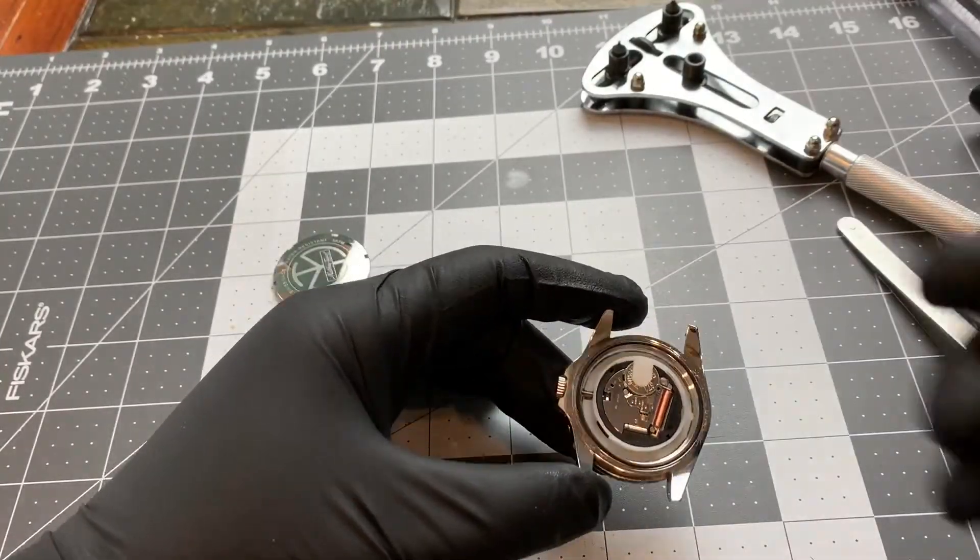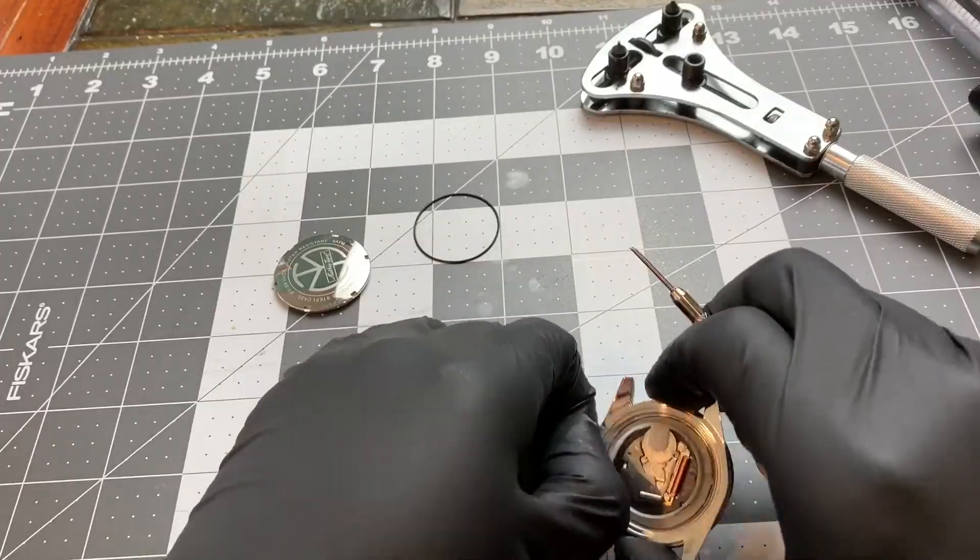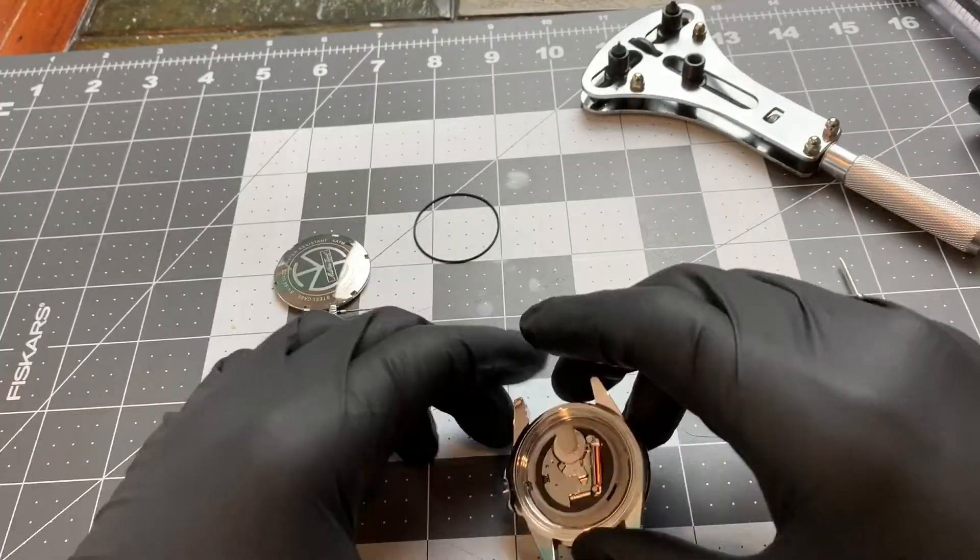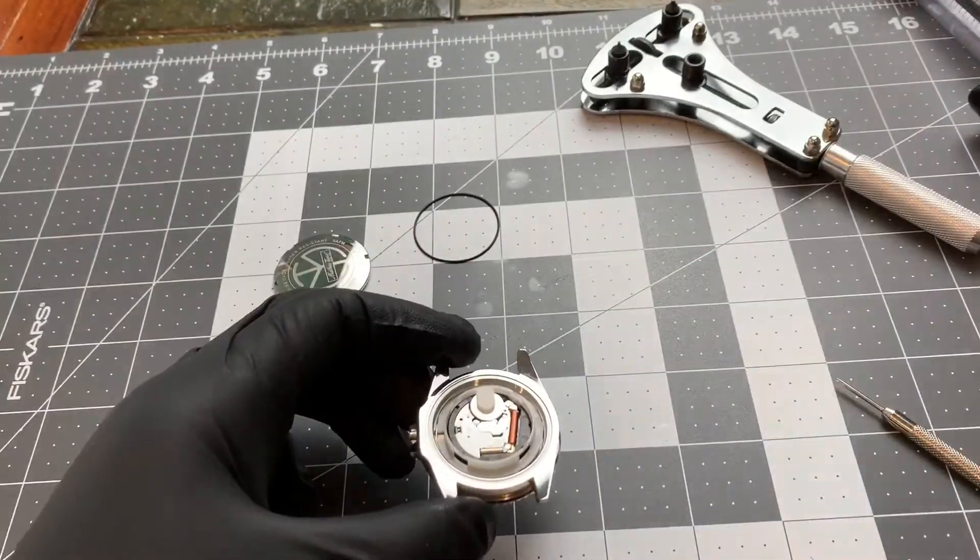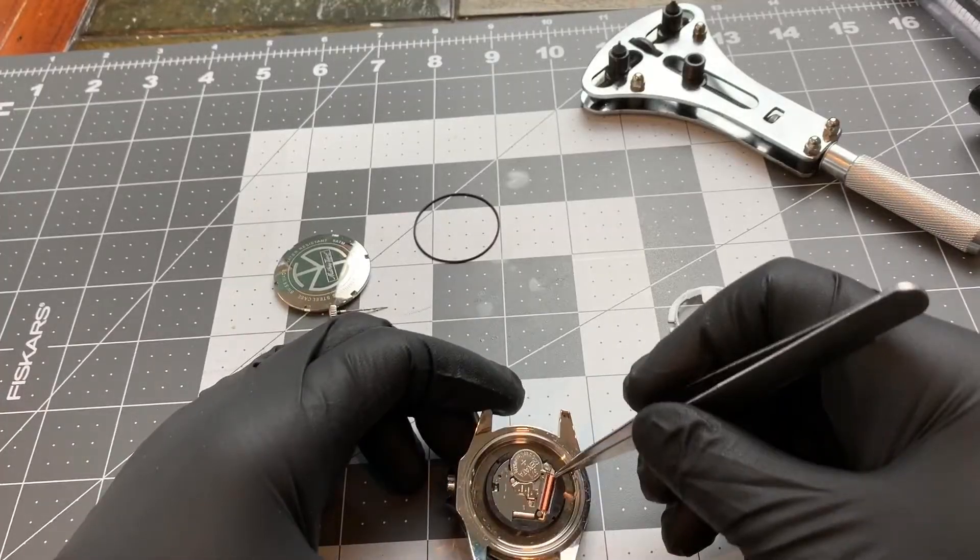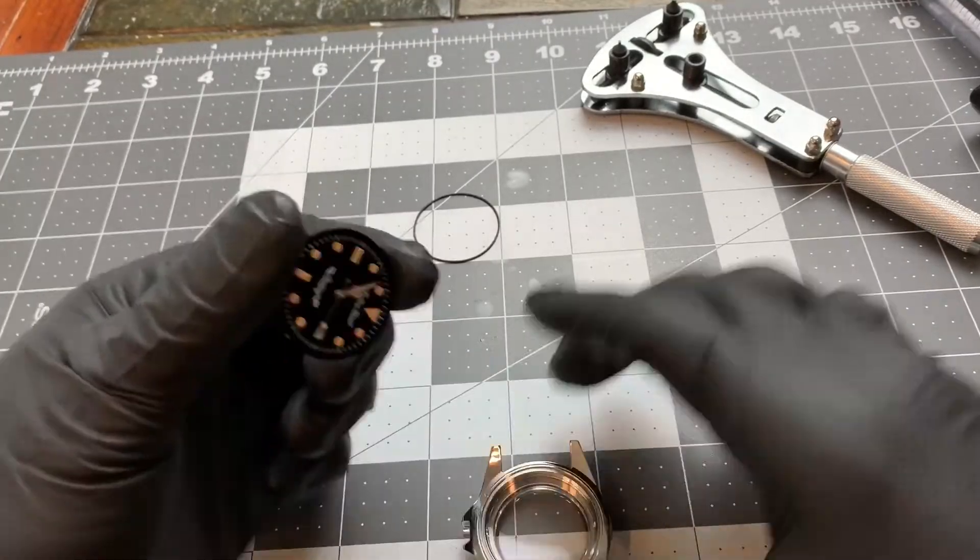Next, you want to take out the crown and the crown stem. With quartz watches, it's extremely easy. There's just a small button you press. You take out the movement holder. In this case, it was plastic. And then take out the entire movement and dial itself. Keep it all together.